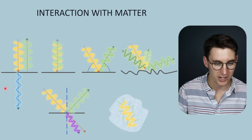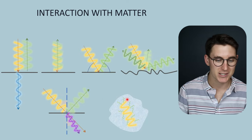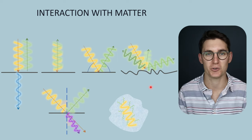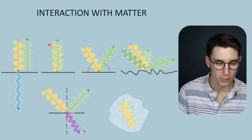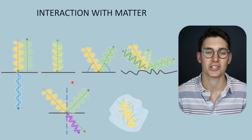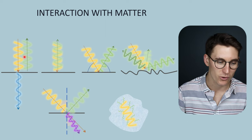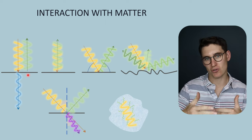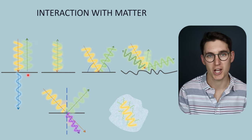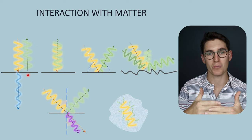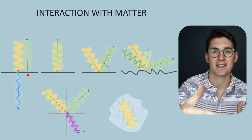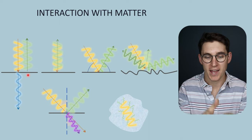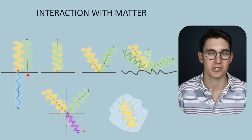When we look at ultrasound interactions with matter, there are multiple different types of interactions, all of which we'll cover in the following two talks. In this top row, this is what's called reflection, where we have an incident ultrasound wave reflecting off a tissue boundary. A tissue boundary describes the interface between two separate tissues — for example, between muscle and fat. That boundary between the muscle and fat is what's known as a tissue boundary, and that's commonly where tissue interactions occur.